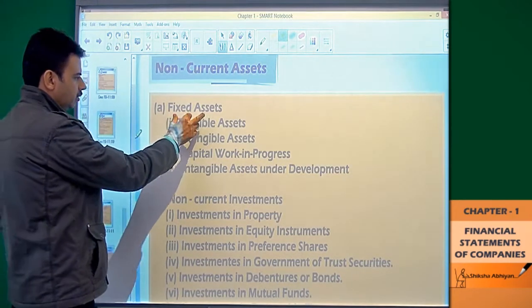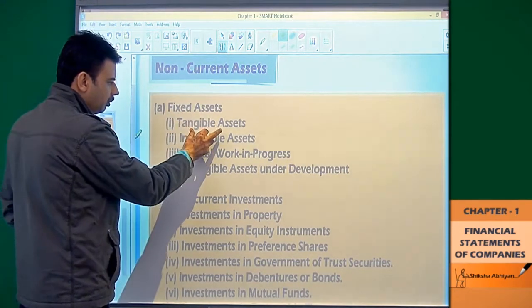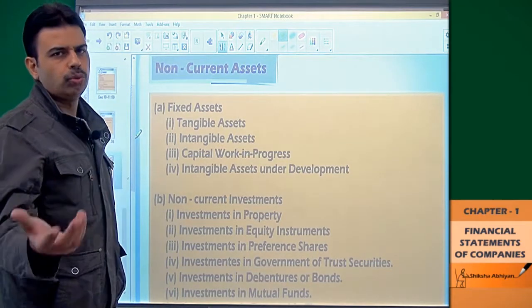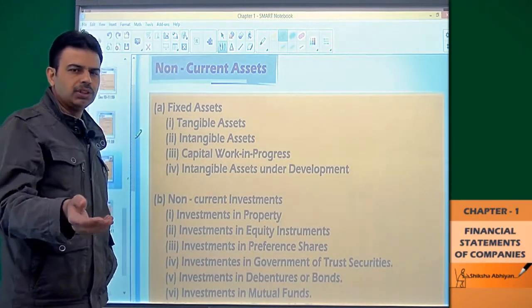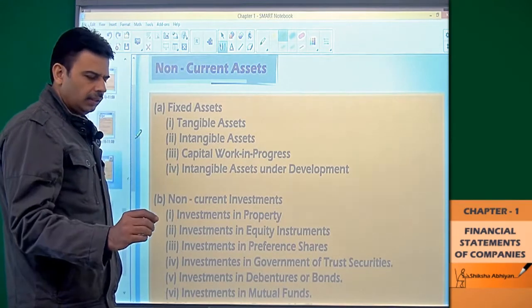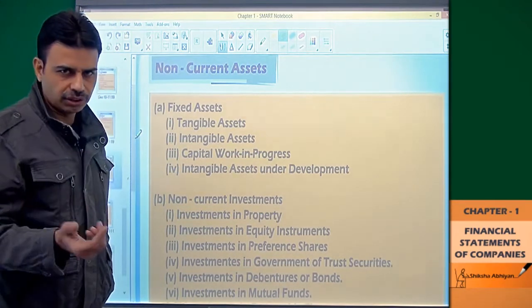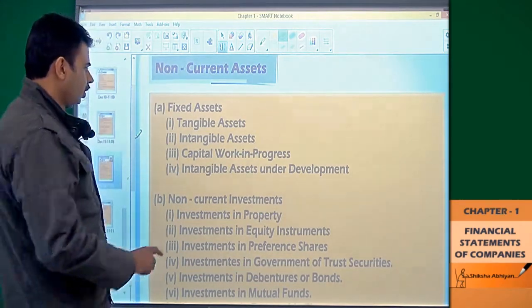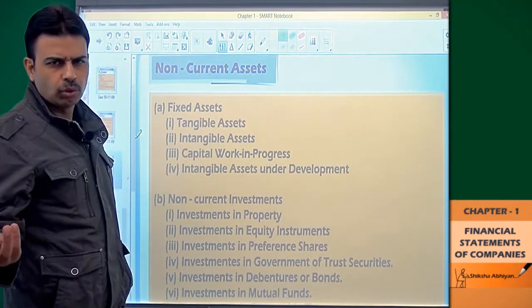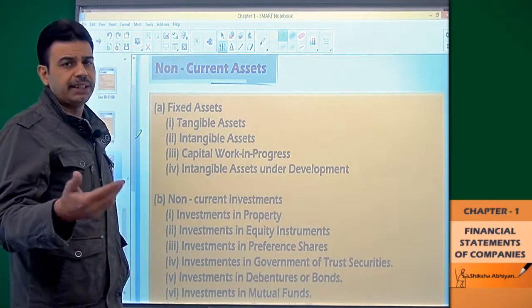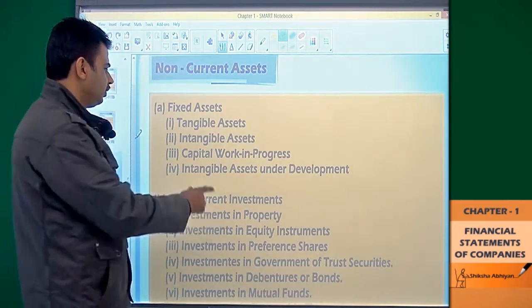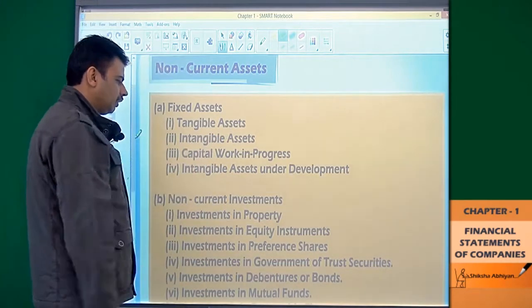In fixed assets, we have tangible assets — tangible means what we call in Hindi, physical assets. Then we have intangible assets. The most important example of intangible assets is goodwill, but there are many others such as patents and know-how. All these things are intangible assets.